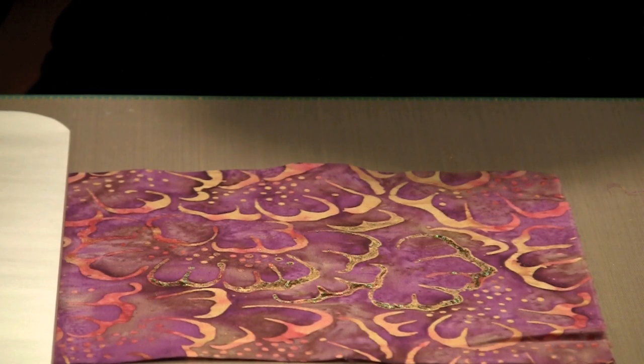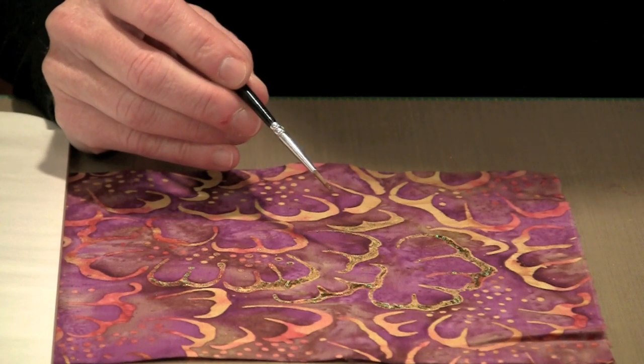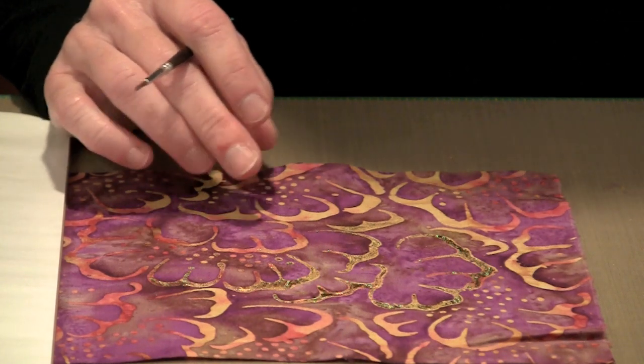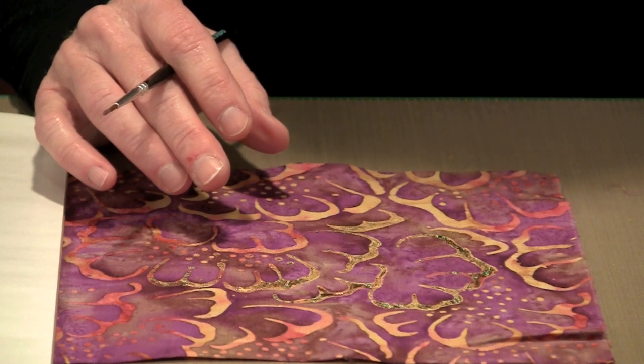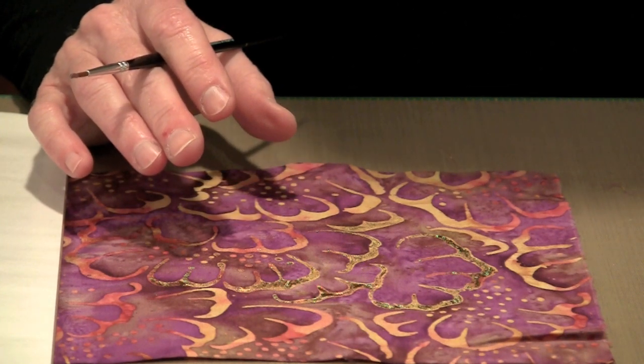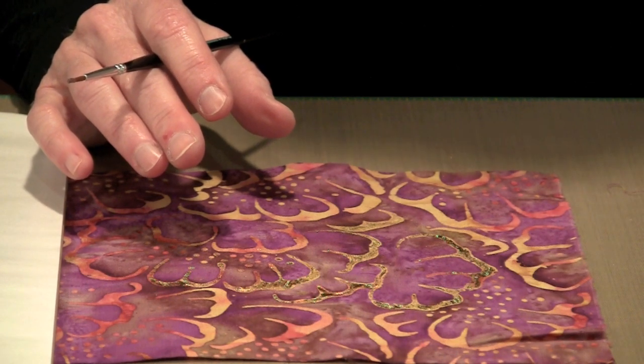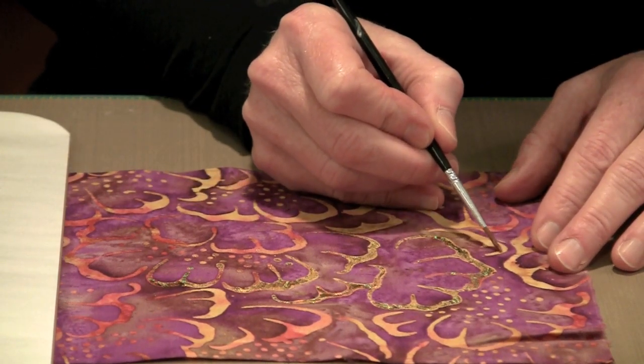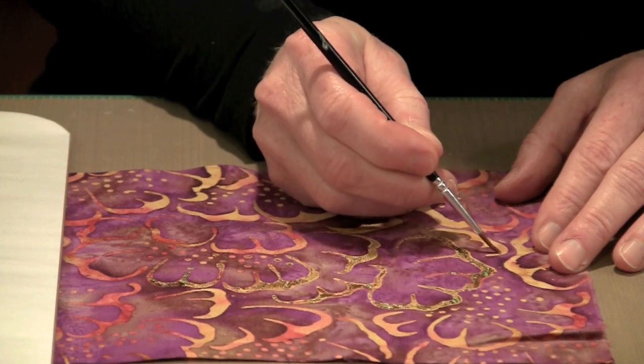Our final technique is foiling on fabric. I have some glue on my palette and this little liner brush that I'm going to apply it with. This is a batik and it has a pattern already printed on it. You can follow the print on the pattern, or you can choose to do something else. If you have a fabric that doesn't have any definable pattern, you can add dots or squiggles or really anything you like. It's going to be as simple as coming in with your brush and just applying the glue.